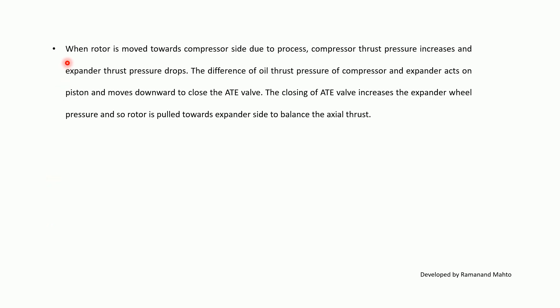When the rotor moves towards the compressor side due to process conditions, compressor thrust pressure increases and expander thrust pressure drops. The difference in oil thrust pressure between compressor and expander acts on the piston and moves it downward to close the AT valve. Closing the AT valve increases the expander wheel pressure, so the rotor is pulled towards the expander side to balance the axial thrust.